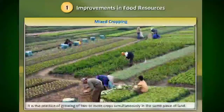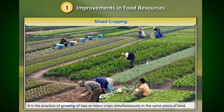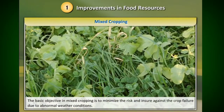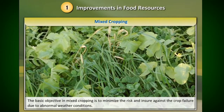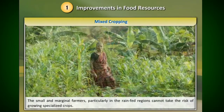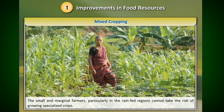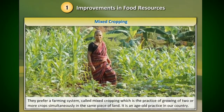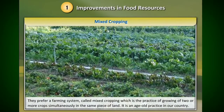Mixed cropping is a practice of growing two or more crops simultaneously in the same piece of land. The basic objective in mixed cropping is to minimize the risk and ensure against crop failure due to abnormal weather conditions. The small and marginal farmers, particularly in the rain-fed regions, cannot take the risk of growing specialized crops, so they prefer a farming system called mixed cropping.